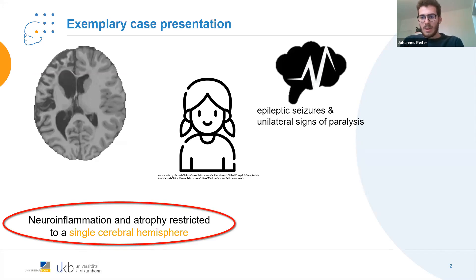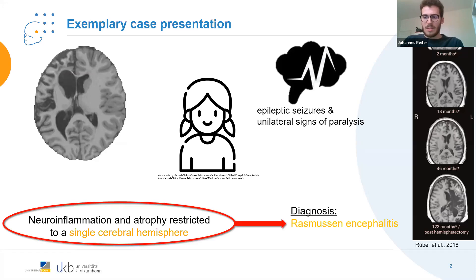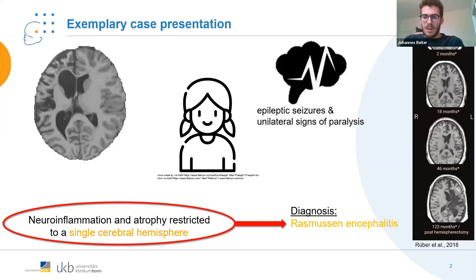That gave the crucial hint towards the diagnosis, so the diagnosis of Rasmussen's encephalitis could be made. Rasmussen's encephalitis is characterized as a strictly unilateral disease with progressive neural inflammation, as shown on the right, and following atrophy.